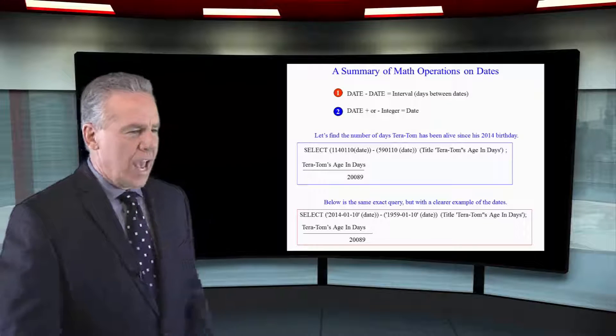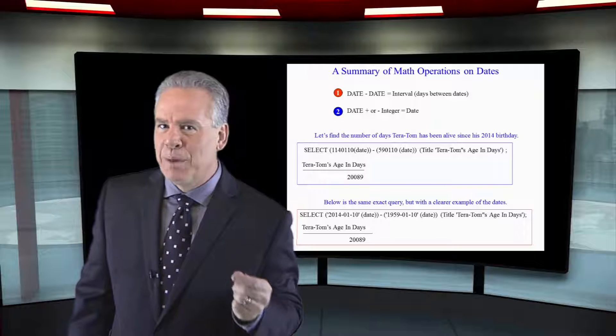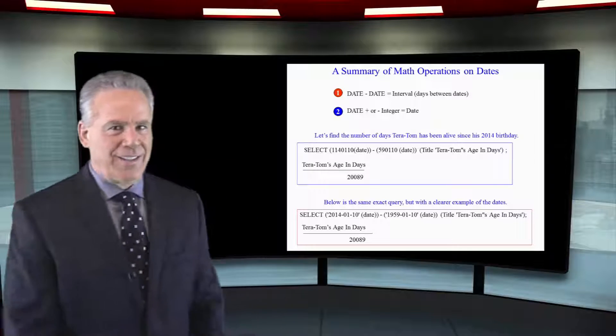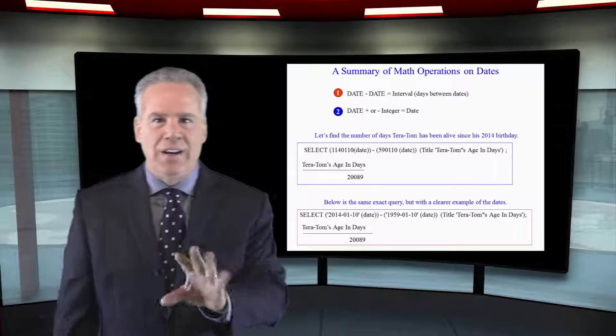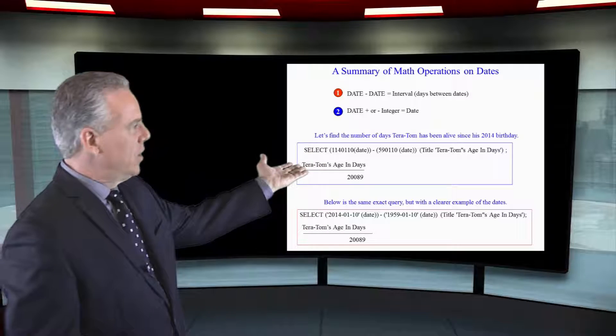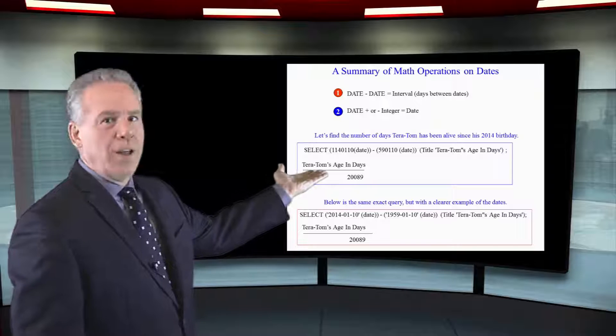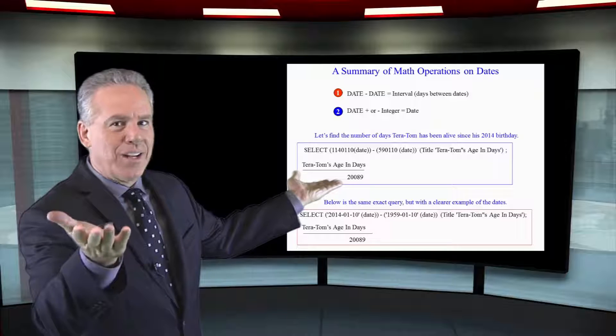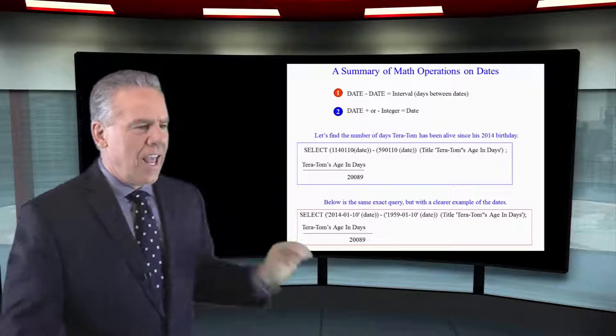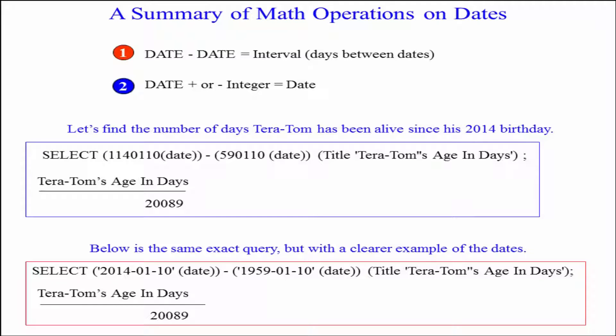We're going to find out how many days Tom's been alive since his birthday on January 10th 2014. Here's how we're going to do it: we're going to select 1140110. I can do that because that's the internal way Teradata stores it. I make sure I mention it's a date, and then I subtract 590110 and make sure it's a date, and these are the number of days that I have been alive. I'm looking pretty good if I say so myself.